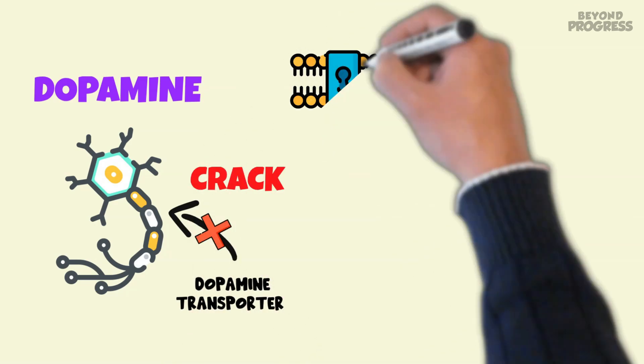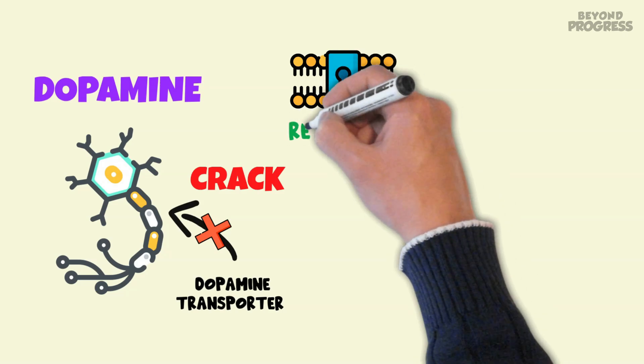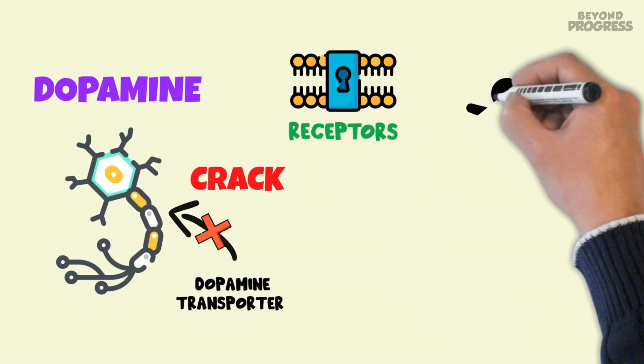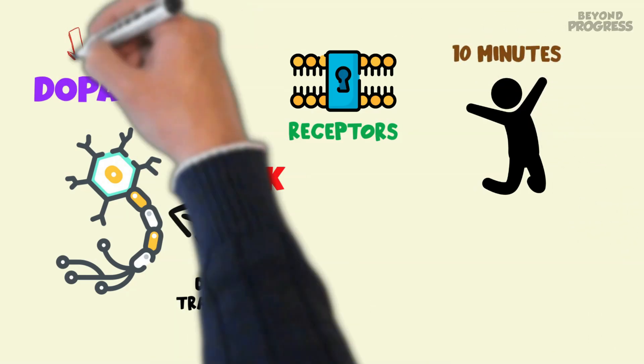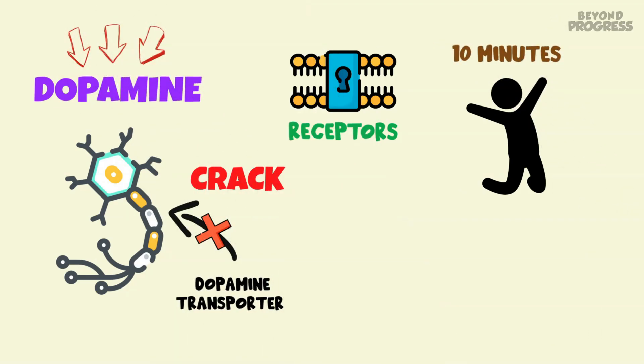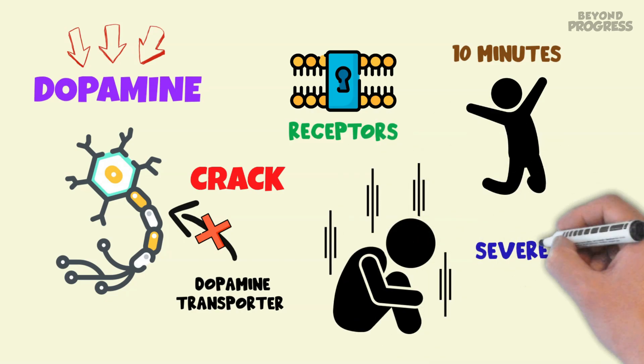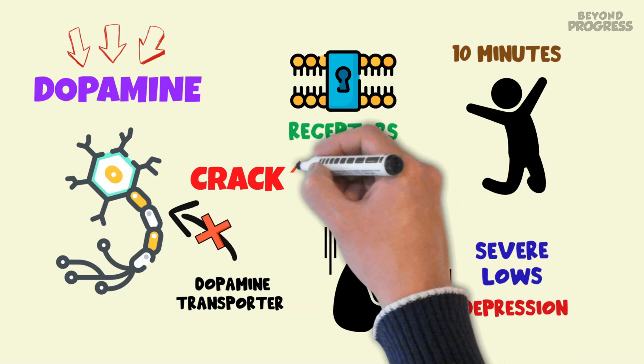This causes dopamine to continuously stimulate the receptors, resulting in intense euphoria lasting around 10 minutes. However, the subsequent crash involves a steep drop in dopamine levels, leading to severe lows and depression.